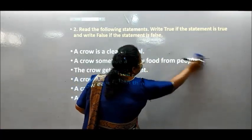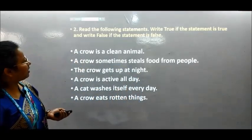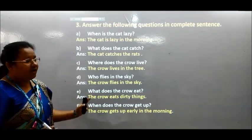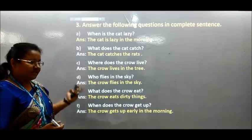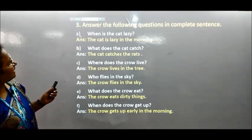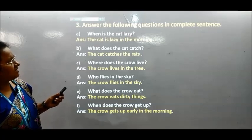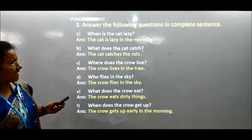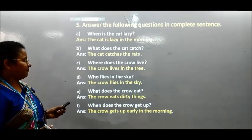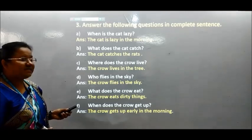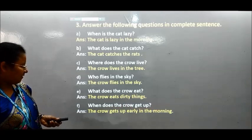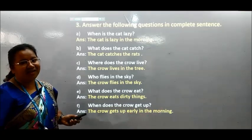Okay friends, did you understand? I hope so. Now we will go for activities number 3. Here question and answer is given. You can follow this question and answer, and you have to study from this video or from the book also. Let's go through one time. A: when is the cat lazy? The cat is lazy in the morning. What does the cat catch? The cat catches the rats. Where does the crow live? The crow lives in the tree. Who flies in the sky? The crow flies in the sky. What does the crow eat? The crow eats dirty things. When does the crow get up? The crow gets up early in the morning.